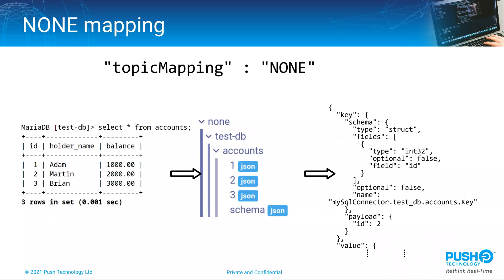And finally there's a mapping called none, which gives you the raw information that Debezium provides. The topic tree it creates is similar to the row mapping type but with far more detail, including additional schema information and the before and after values for any changed rows. For most use cases this is probably too much information, but if you do need this level of detail then it's available to you.